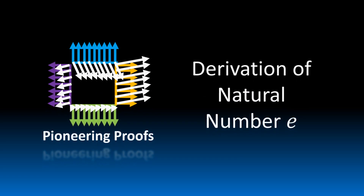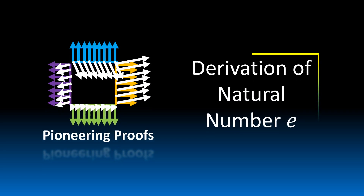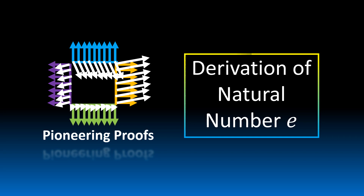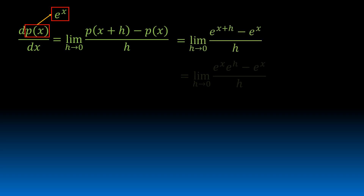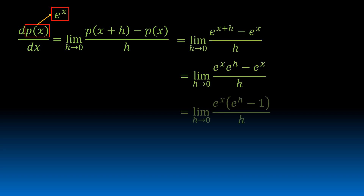Hello and welcome. Today we will be deriving the natural number e. We substitute e^x for p(x) into the limit definition, and we get e to the x times (e to the h minus 1) over h. That is the limit as h approaches 0.